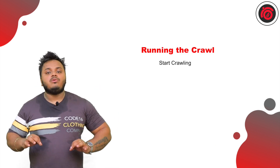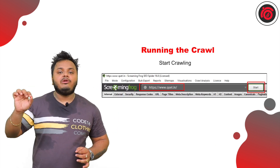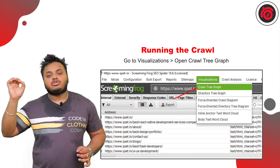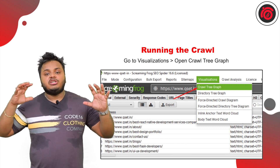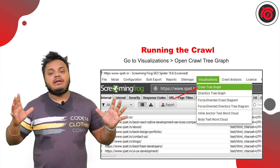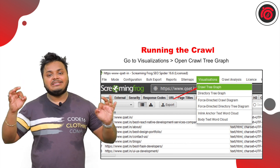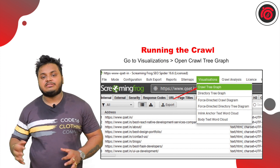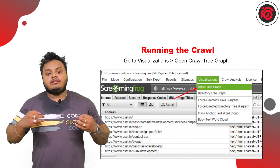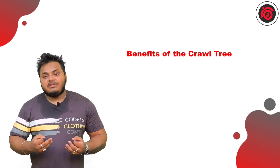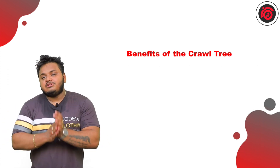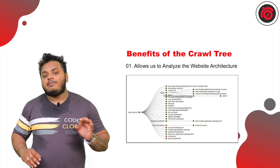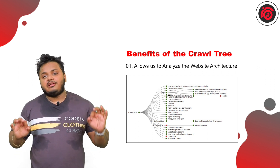As you can see from the screen, once you scan a particular URL you can go into the Visualization tab and click on 'Visualize Crawl Tree.' This will give you a complete hierarchy and structure of how your particular website is organized. There are a lot of benefits to this.